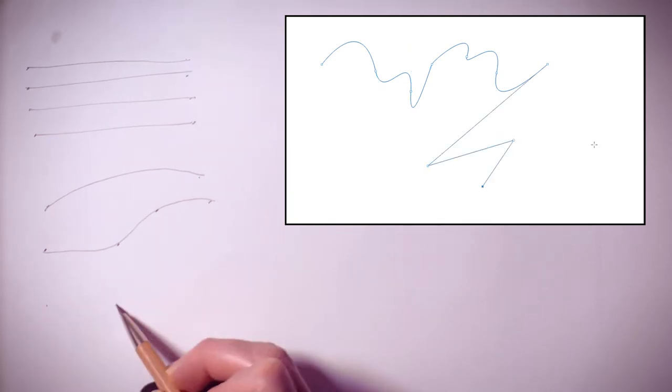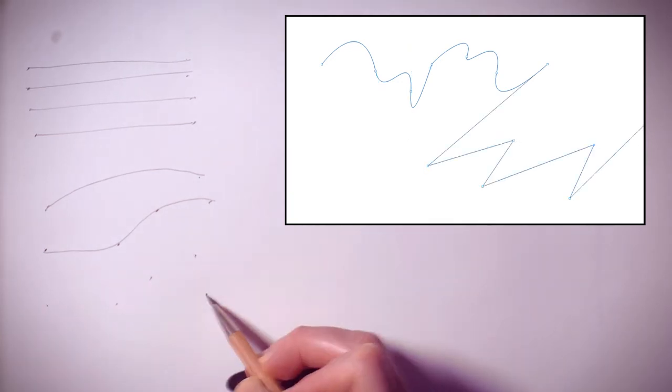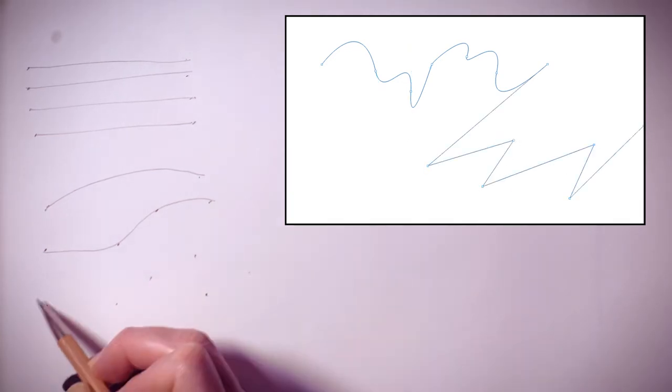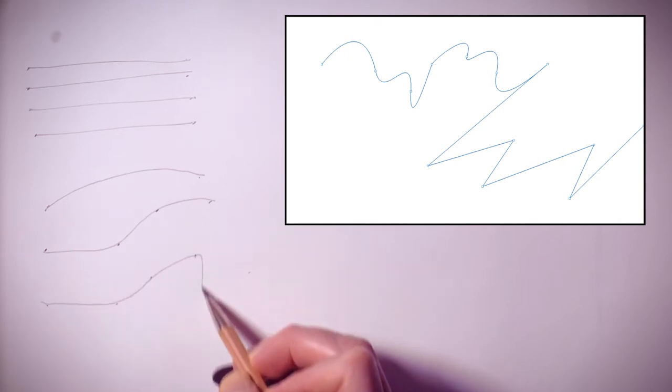That will also show you that depending on the number of points along that line, you can define the features of that line — meaning if there are more points then you can change the attributes of the line, so you can have something more squiggly or something more jagged.